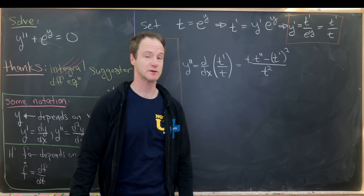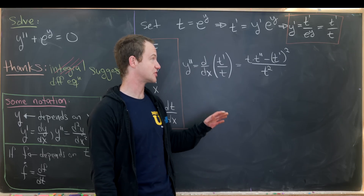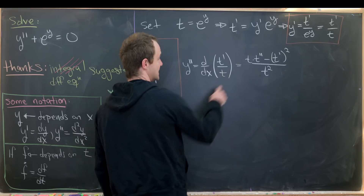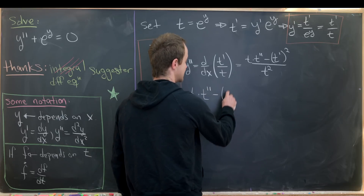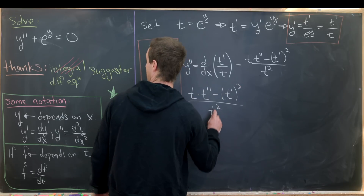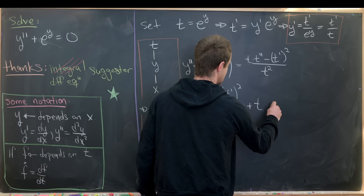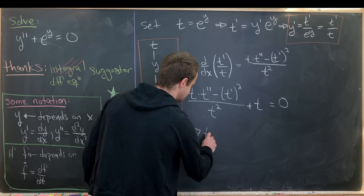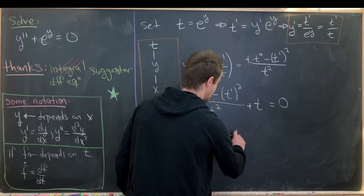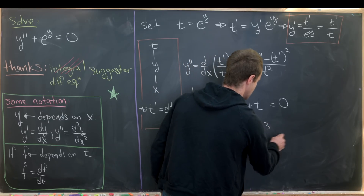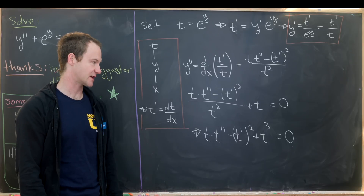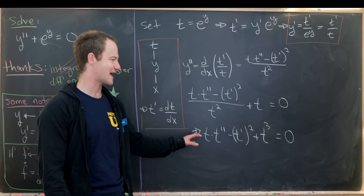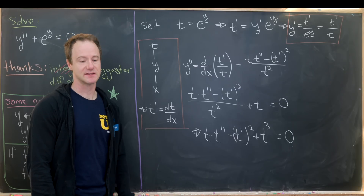Plugging this into our expression along with the substitution t equals e to the y, we've changed our differential equation from one dealing with y to one dealing with t. We have t times t double prime minus t prime squared over t squared, plus t equals zero. Clearing denominators gives us t times t double prime minus t prime squared plus t cubed equals zero. That's still a nonlinear second order ODE, but now it only has algebraic functions instead of the transcendental function e to the y.